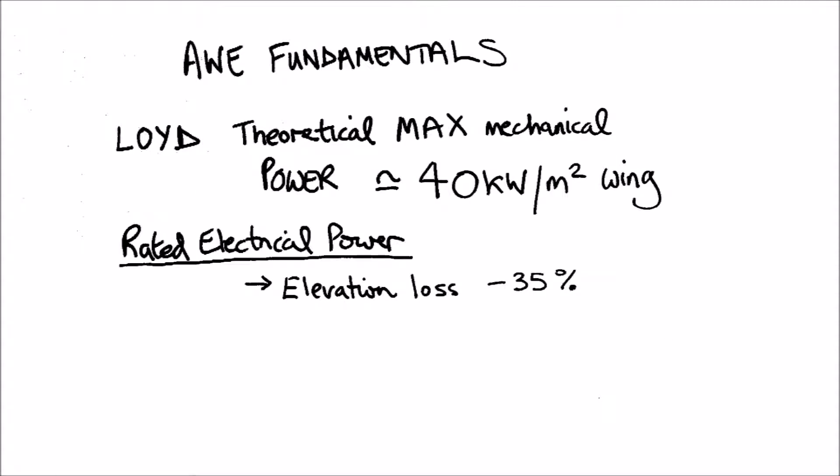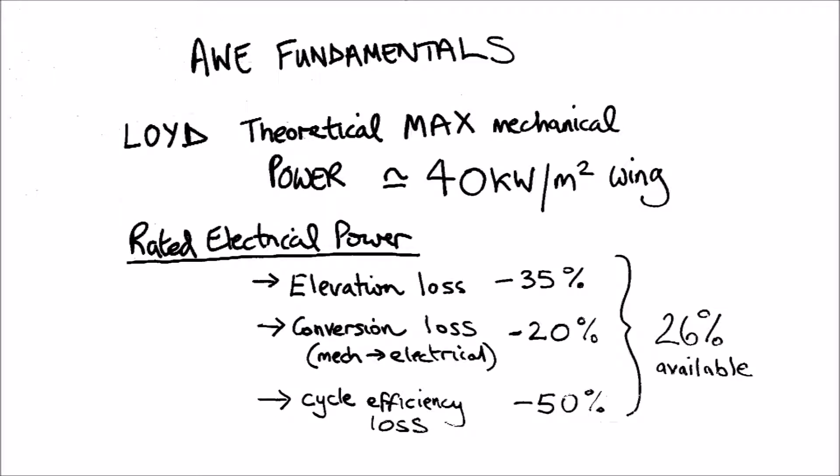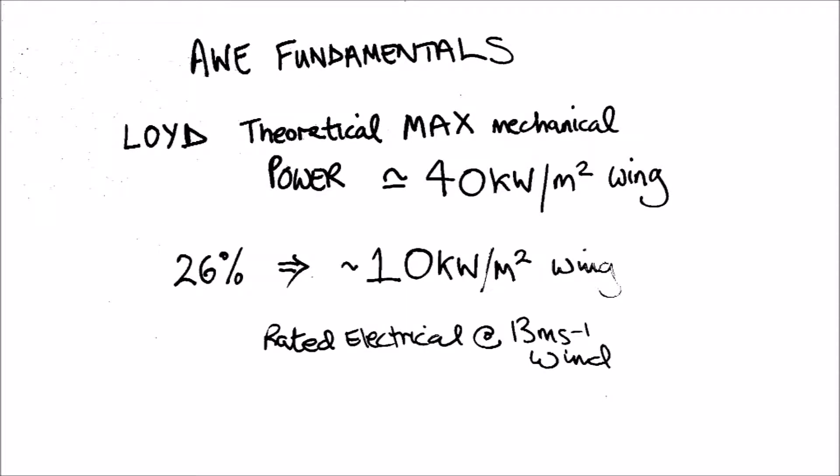For the mechanical to electrical power conversion, we assume a 20% loss, and the cycle efficiency loss will be at least 50%, as we've looked at before. The end result is a rated electrical power of 10 kilowatts per square meter of wind area.